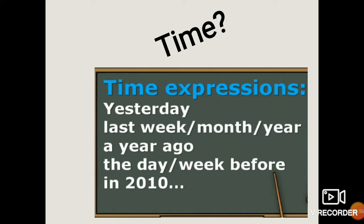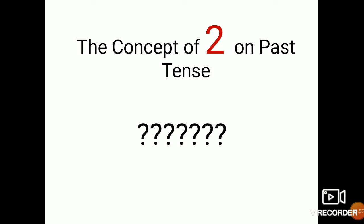Let's talk about the adverb of time for past tense. Here I have several examples of time expressions for past tense: yesterday, last week, last month, last year, a year ago, the day before, or the week before. We can also state the year — for example, in 2010 — because this year is 2020, we can say that 2010 indicates a past event.